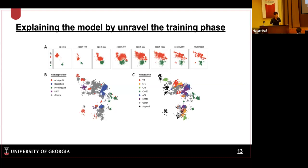Very interestingly, because our target substrates have two very distinct amino acids in the center, at first the model learned to classify different substrate pairs based on the center amino acid. But after training, it gradually merged those two groups together and regrouped them by kinase substrate specificity. In the final projection, the model learned a mixture of kinase evolutionary information as well as kinase binding specificity information. Without this kind of visualization across training, you actually don't know how the model gradually learned this information or where you need to stop training.